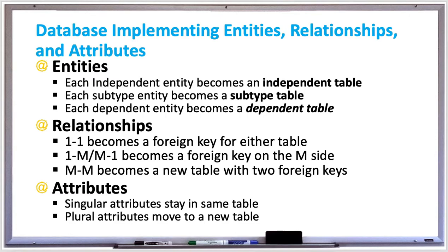Attributes can be singular or plural. Each entity instance has at most one singular attribute instance, or can have many plural attribute instances. Singular attributes stay in the same table while plural attributes move to a new table. The new table's primary key should be a composite key made up of the plural attributes and the foreign key which references the initial table. Name the new table with the initial table's name followed by the name of the attribute.